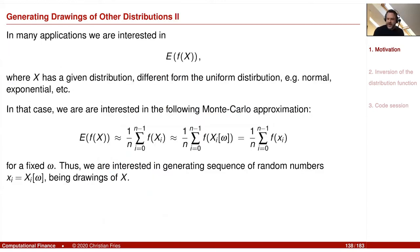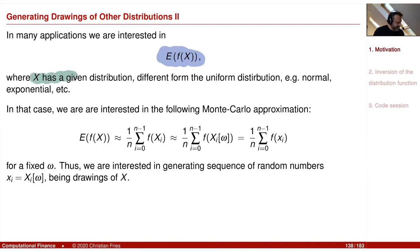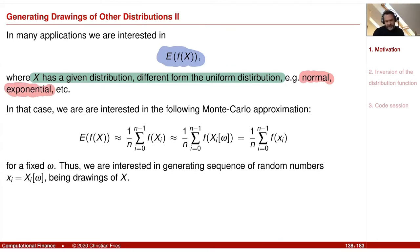Now let's take a look at this expectation again. We are interested in calculating the expectation of F(X). In many applications, we would like to calculate such an expression when X has a distribution different from the uniform distribution — for example, X being normally distributed, exponentially distributed, gamma distributed, or whatever. In that case, we can still apply this theorem; our interpretation of Monte Carlo integration was just a special case.